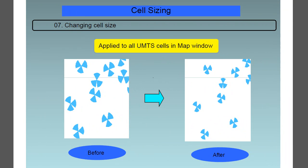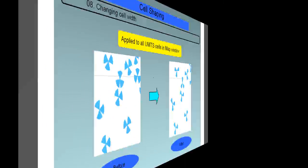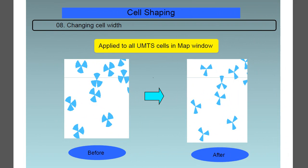The next feature is the changing cell size. You can see the before and after images after the change has been applied to all UMTS cells in the map window. Similarly, you can change the cell width. Again, you see the before and after images as being applied to all UMTS cells in the map window.